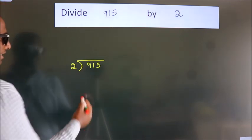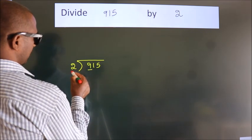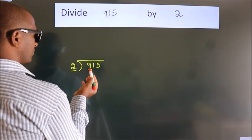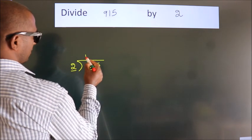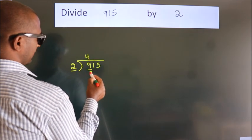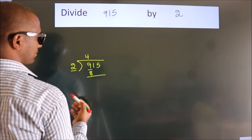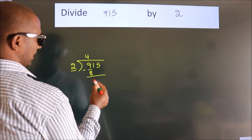Next, here we have 9, here 2. A number close to 9 in 2 table is 2 4s, 8. Now we should subtract. We get 1.